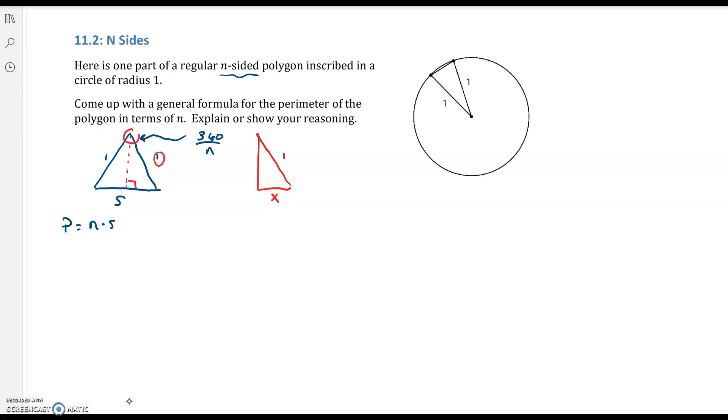Now I took this vertex angle and I broke it - I cut it in half. So I've got to take this 360 over N and divide that by 2 or multiply it by 1 half. That's going to be the size of this angle. So 360 over N times 1 half is 360 over 2N, which is the same as 180 over N. That's going to be this angle measure, 180 over N.